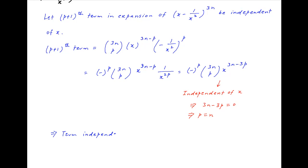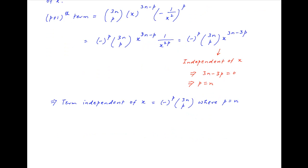It therefore follows that the term independent of x in the expansion of the given expression is equal to minus raised to the power p times 3n choose p, where p equals n. This gives minus raised to the power n times 3n choose n, which equals minus raised to the power n times 3n factorial divided by n factorial times 2n factorial — which is the required answer.